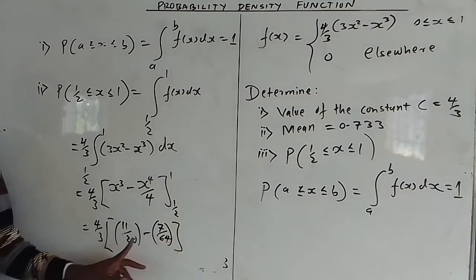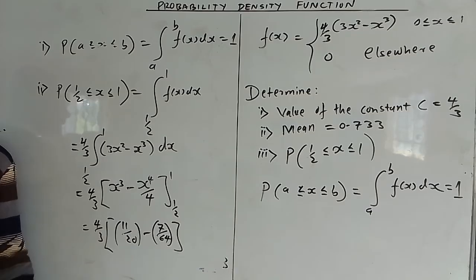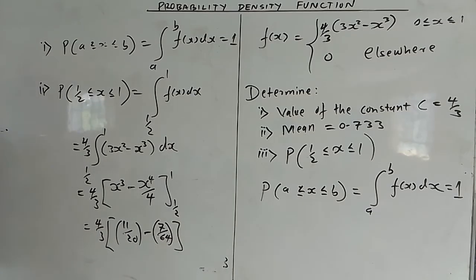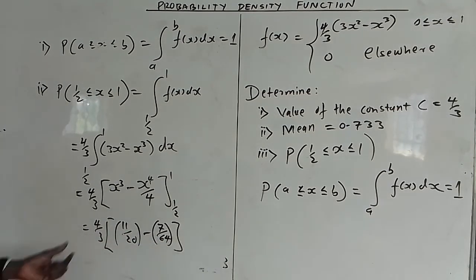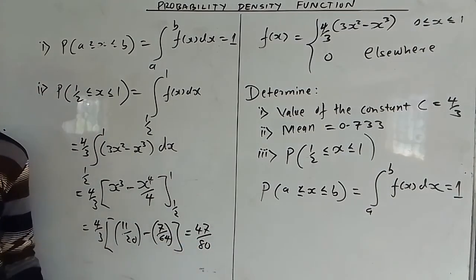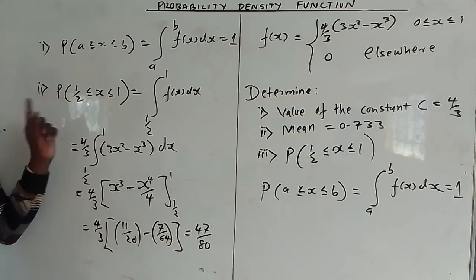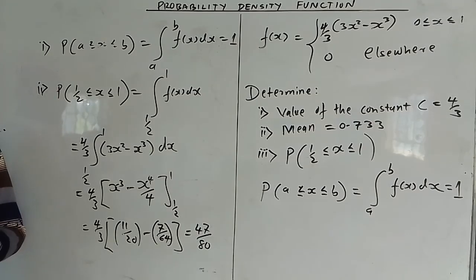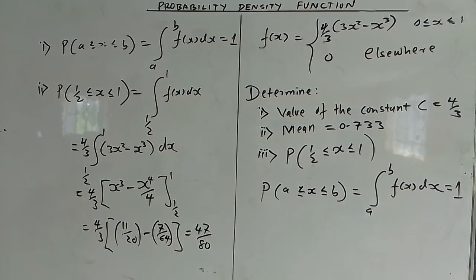So the probability is (4/3) times (11/20 - 7/64). Computing 11/20 - 7/64: the common denominator is 80, giving 44/80 - 7·(80/64)/80... which simplifies to 47/80. Multiplying by 4/3 gives the final answer 47/80. This value is between 0 and 1, as all probabilities must be, confirming the result is valid. That is how to solve this problem.